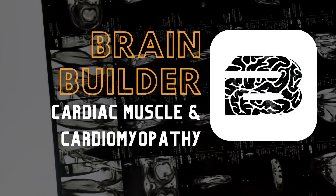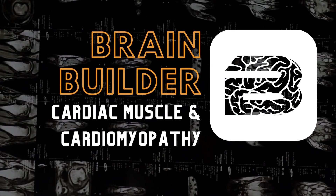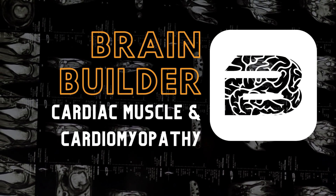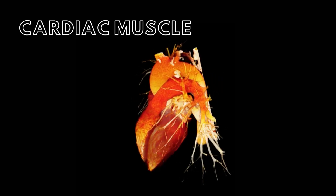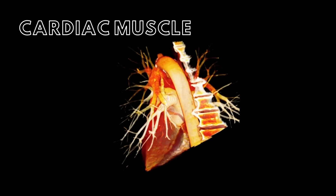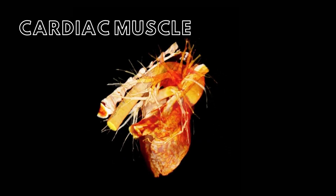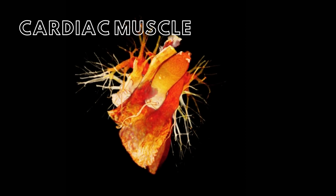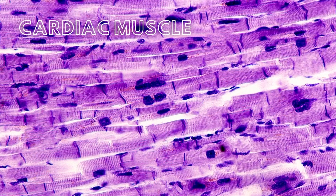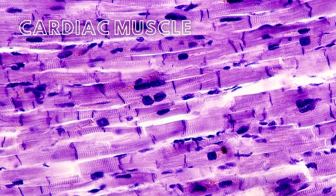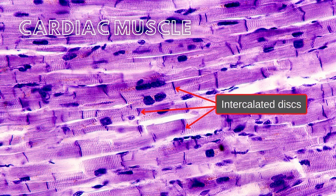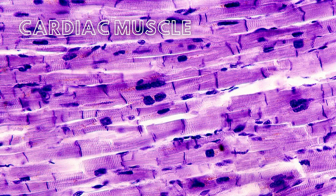Today, we are going to look at a body viz brain builder about cardiac muscle and cardiomyopathy. Cardiac muscle is only found in the heart and is involuntary striated muscle tissue. It is composed of individual cells joined by complex cellular junctions termed intercalated discs. These specialized junctions cause cardiac muscle to function as one unit, in that the stimulation of one cardiac muscle cell results in the contraction of all cardiac muscle cells.